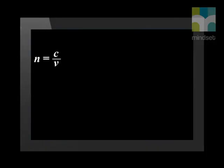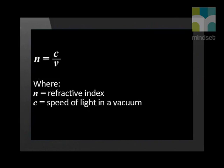We can write this as an equation: n = c ÷ v, where n is the refractive index, c is the speed of light in a vacuum, and v is the speed of light in the substance.